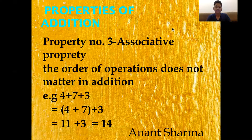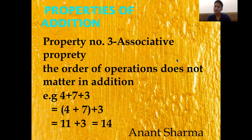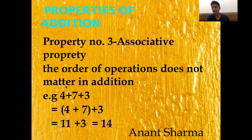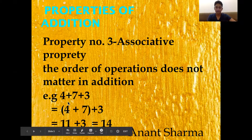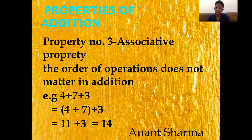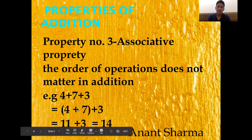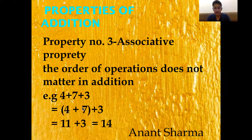Property number 3 is the Associative Property: the grouping of operations does not matter in addition. For example, with three numbers 4, 7, and 3, we write 4 plus 7 plus 3. If we choose to add 4 and 7 first, we put them in brackets: (4 + 7) + 3. By BODMAS we solve the bracket first — 4 plus 7 equals 11 — then 11 plus 3 equals 14.